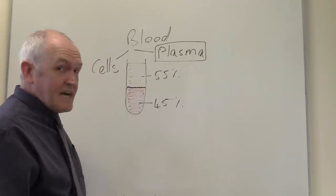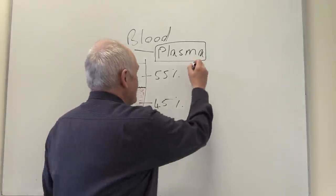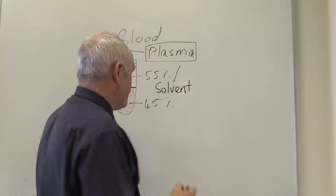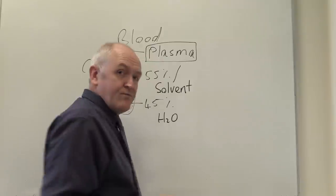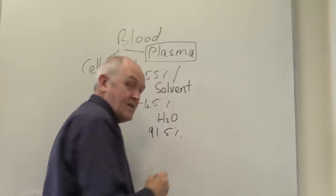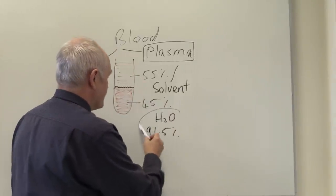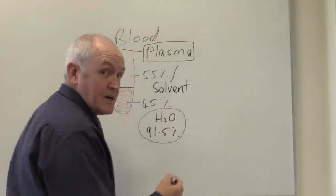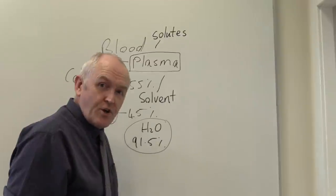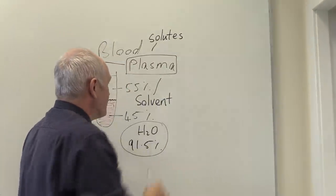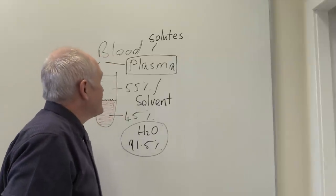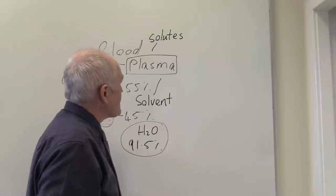The amount of blood that is red cells we term the hematocrit — the proportion of the blood that is red cells. Today we want to look particularly at the plasma. The plasma contains a solvent, which of course is water. About 91.5% of the plasma is water, and the other part is the solutes — the materials dissolved in that water.